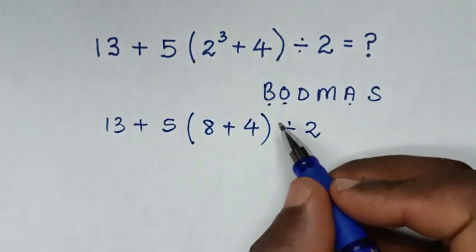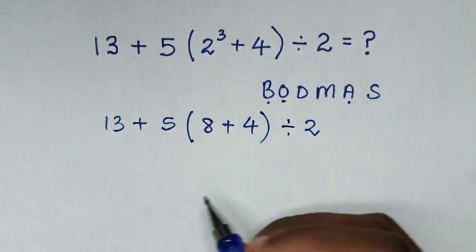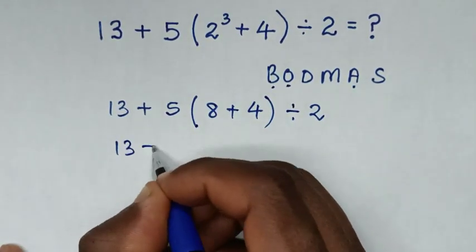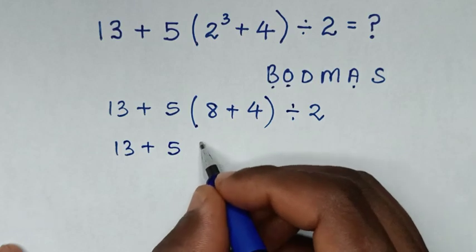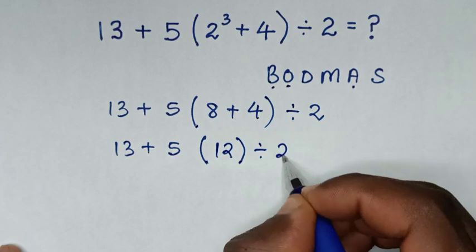Then after we already deal with this order, we deal with addition in this operation inside the bracket. So it will be 13 plus 5, then bracket. 8 plus 4 is 12, bracket, divided by 2.